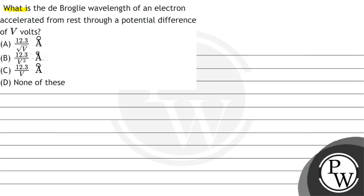Let's read the question. The question says what is the de Broglie wavelength of an electron accelerated from rest through a potential difference of V volts?